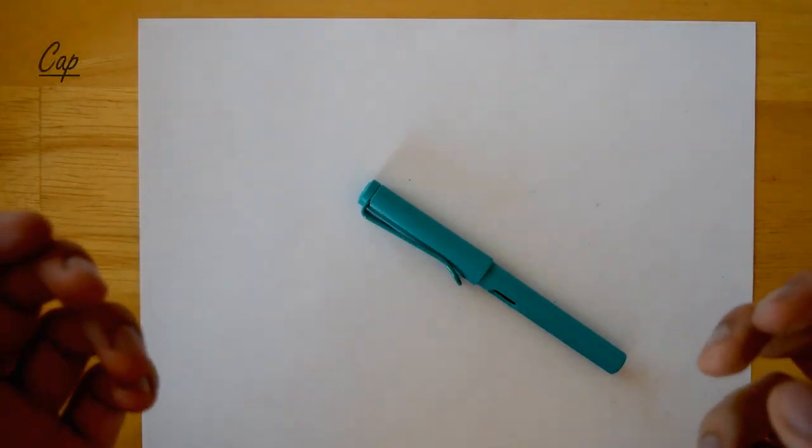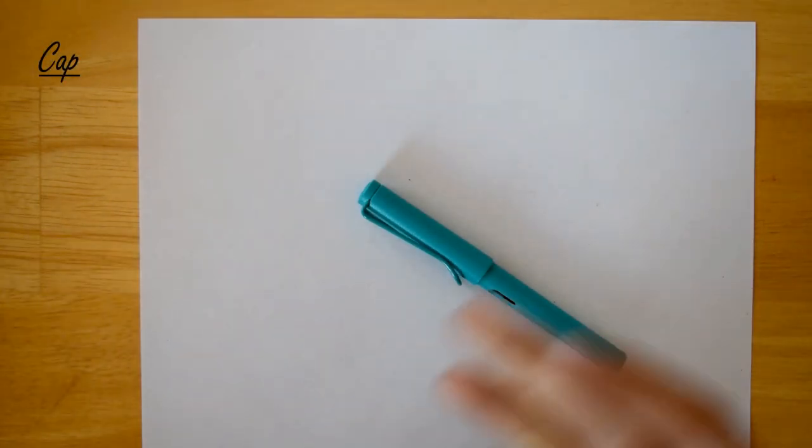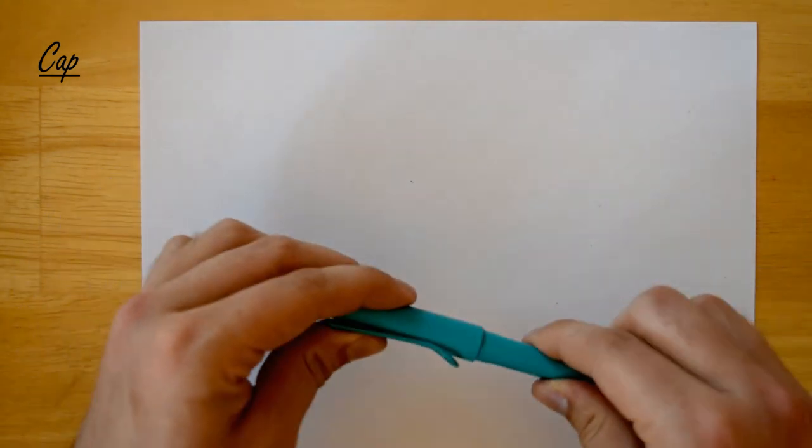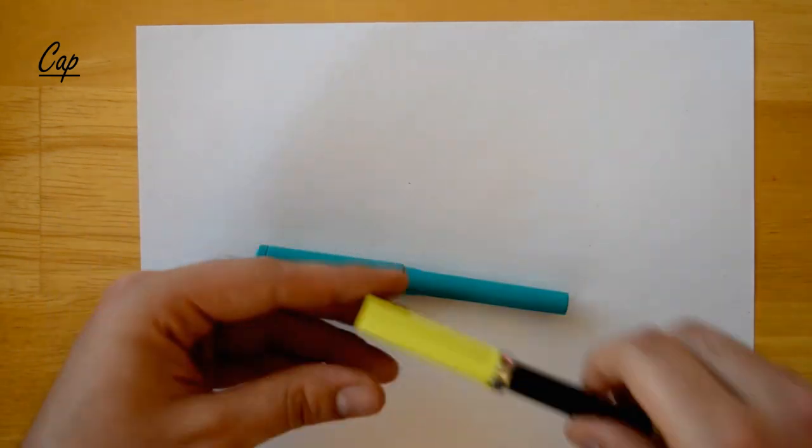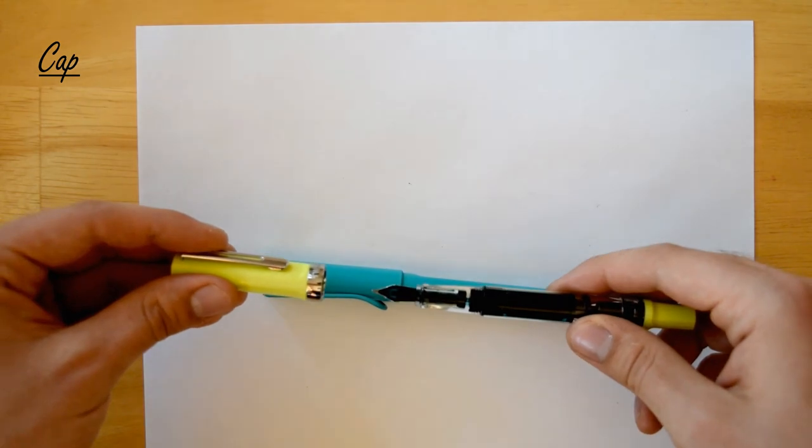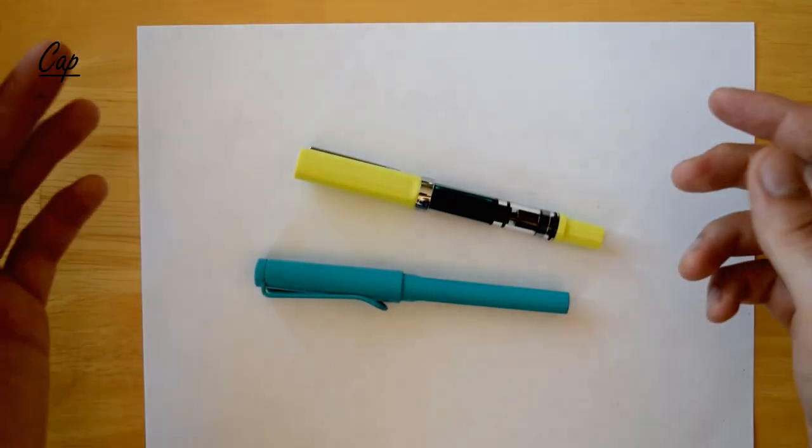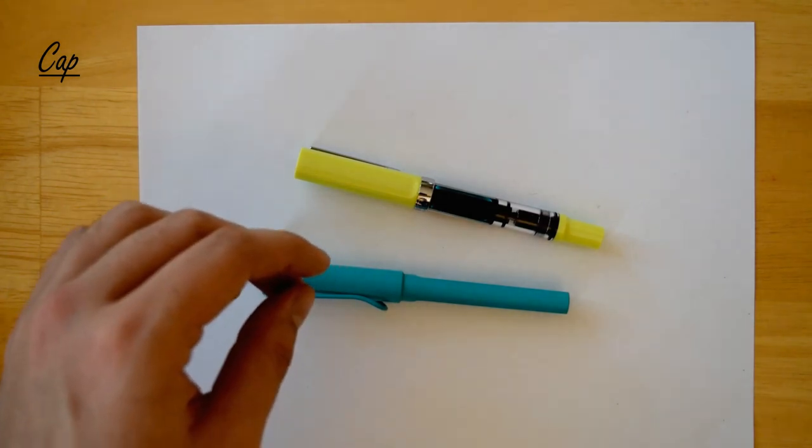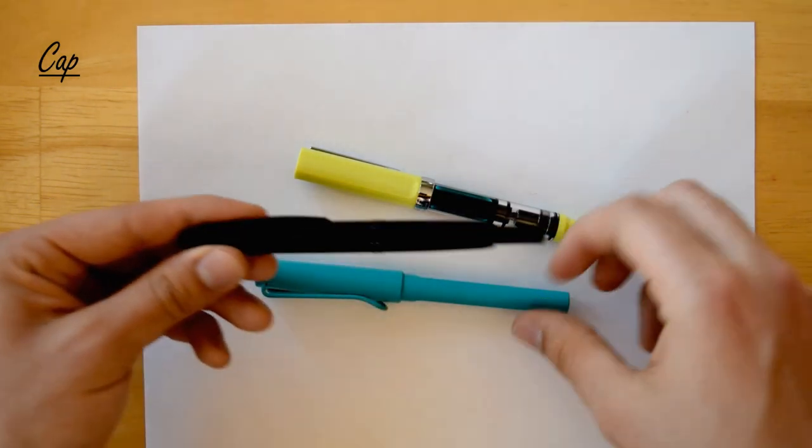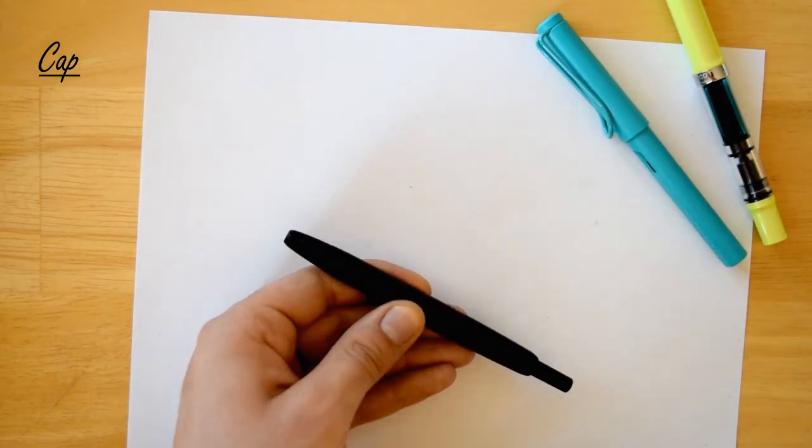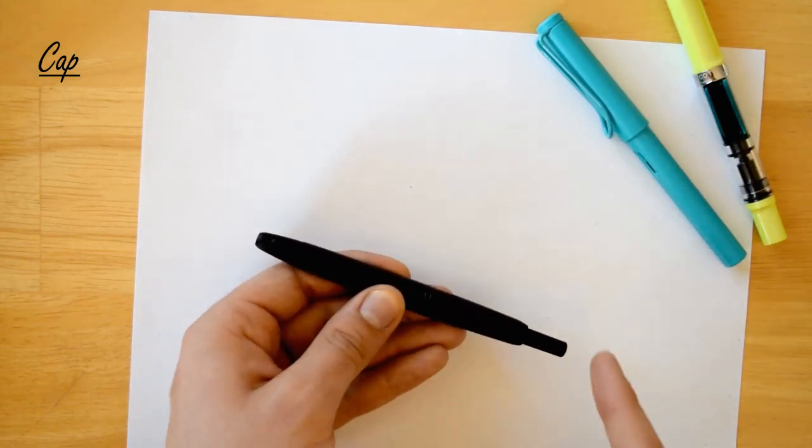Next we have the cap of the pen. Of course, I know you know what a cap is - it's simply this plastic part that either snaps onto the pen or threads onto the pen to protect the nib and prevents the ink from drying out. I just wanted to let you know that some fountain pens like this Pilot Vanishing Point in matte black has actually no cap - it's a capless pen.